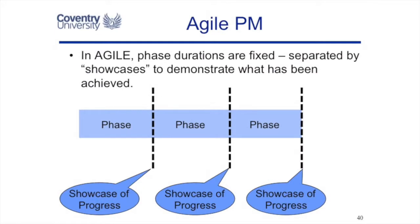Agile project management says: let's have equal durations for the phases — set them at two weeks or one month — and let's review progress on a regular basis. By doing this, we're clearly saying we want to see regular progress at key events. It's not just a sign-off by management at a milestone; it is a demonstration or showcase of what has been achieved.